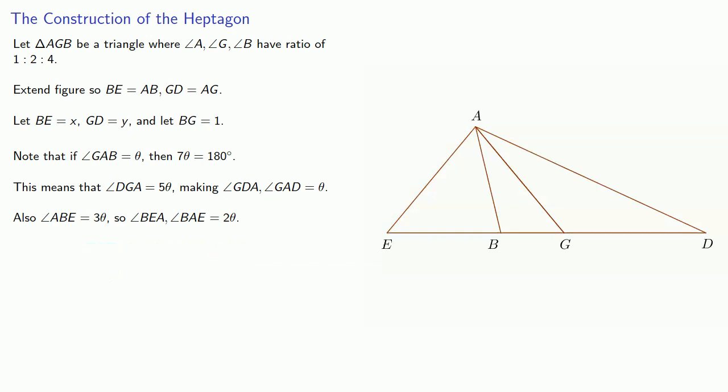And this gives us a couple of similar triangles. AGB is similar to DAB. And AEB is similar to EGA.